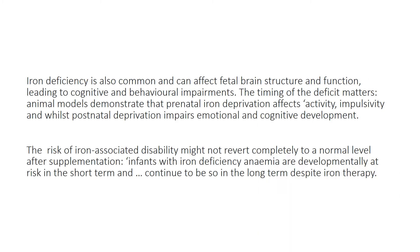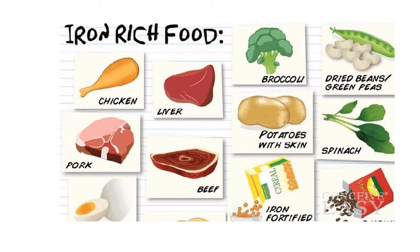Iron deficiency, according to the WHO, is common among 25% of the world population. It can affect brain structure and function, leading to cognitive and behavioral impairments. Animal models show that timing matters: prenatal iron deprivation affects activity and impulsivity, while postnatal deprivation impairs emotional and cognitive development. The risk of iron-associated disability may not revert to normal even after supplementation, so infants with iron deficiency anemia remain developmentally at risk long-term despite iron therapy. Iron-rich foods include heme iron sources — chicken, liver, pork, beef, and eggs — and non-heme iron in broccoli, dried beans, potatoes, spinach, and iron-fortified cereals.